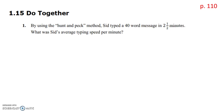Question number one: by using the hunt-and-peck method — Sid is a one-finger typer — Sid typed a 40-word message in two and a half minutes. What was Sid's average typing speed per minute? What the question wants is the speed per one minute.